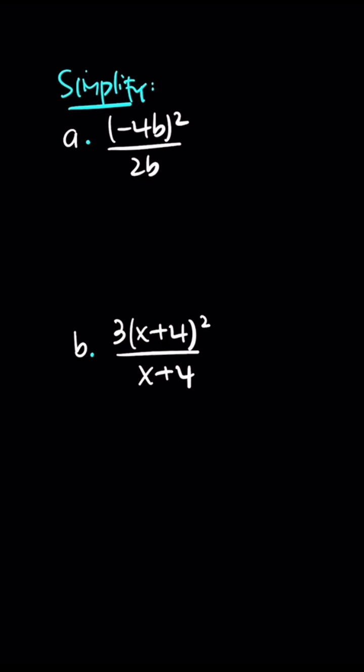So we can simplify by distributing -4b times -4b out of 2b. We know that when we multiply negative times negative that equals positive. So -4 times -4 that's 16 times b times b. And then we have 2 times b.